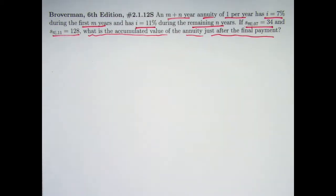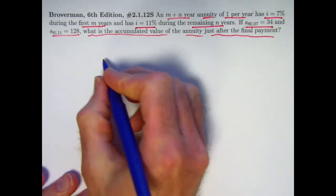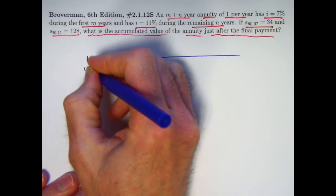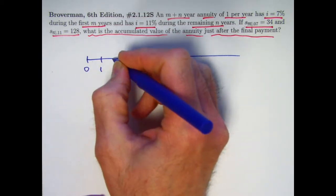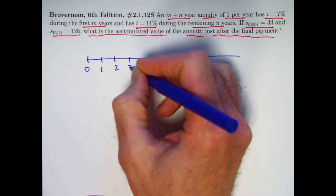This would be a problem where it would be good to use a timeline. So we start at time zero, the present. The first payment is going to be one year in the future. It's going to be at the end of every year.